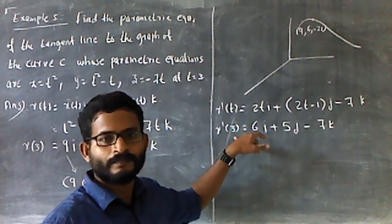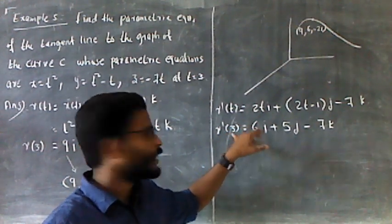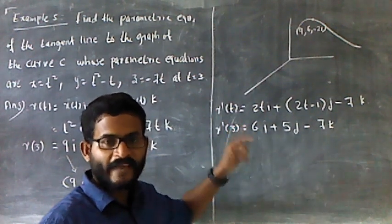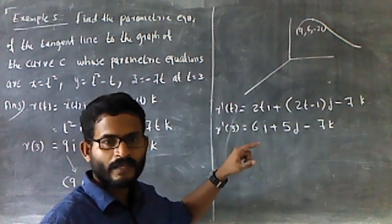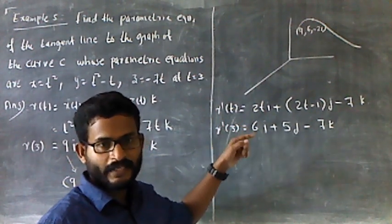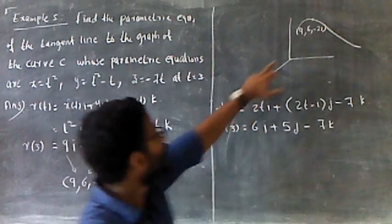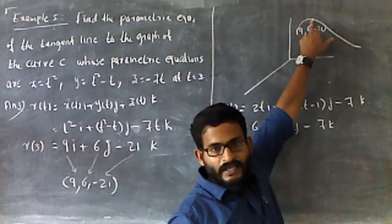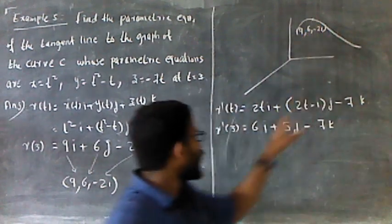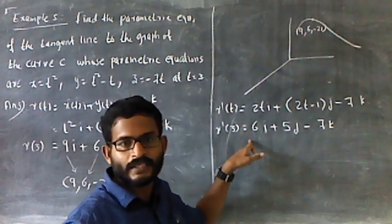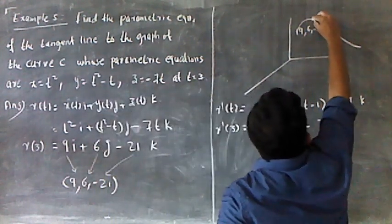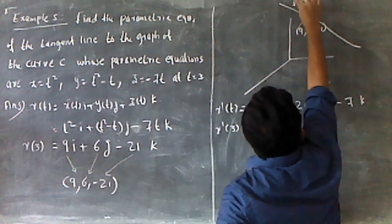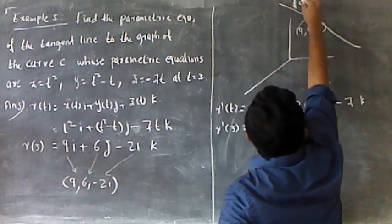7pi. I keep going to find R of 3, which gives us the end point. The R of 3 is the tangent line. What is R of 3? R of 3 is the tangent line.